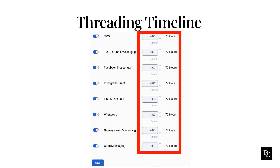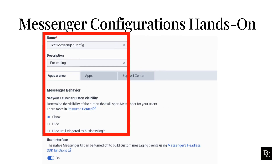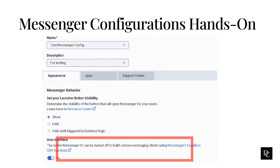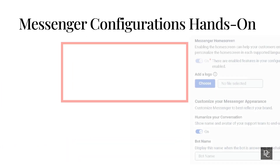Next, we are going to dig deeper into messaging and walk through Messenger configurations. Messaging improves the customer experience when they visit your website. Before you use web messaging, configure it in Genesis Cloud. Under Message, click Messenger Configurations. Click New Configuration. Enter a name and description. Under the Appearance tab, set your launcher visibility. Under User Interface, leave on if deploying the Messenger native interface, or turn on if building your own messaging client. Under Messenger Home Screen, select whether you want the Messenger to display the home screen.